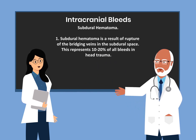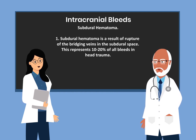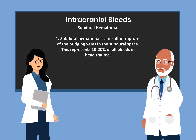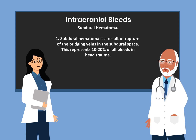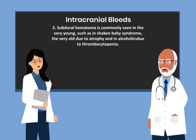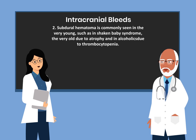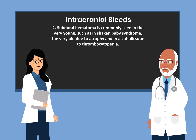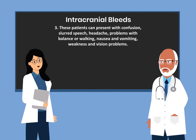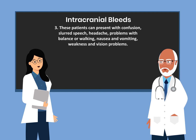The next bleed is the subdural hematoma. Subdural hematoma is a result of rupture of the bridging veins in the subdural space. This represents 10–20% of all bleeds in head trauma. Subdural hematoma is commonly seen in the very young, such as in shaken baby syndrome, the very old due to atrophy, and in alcoholics due to thrombocytopenia. These patients can present with confusion, slurred speech, headache, problems with balance or walking, nausea and vomiting, weakness, and vision problems.